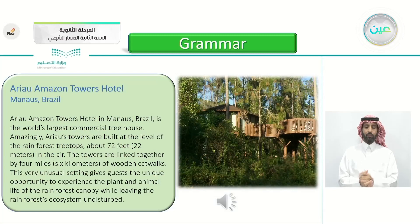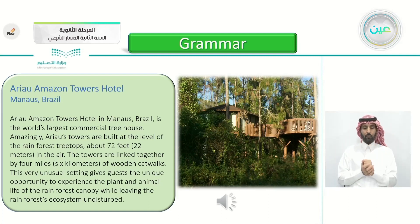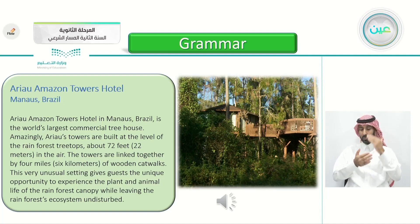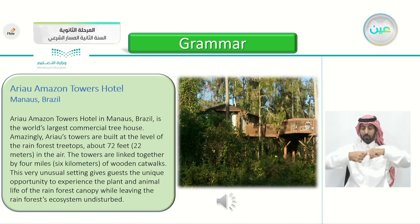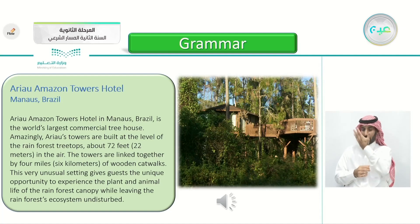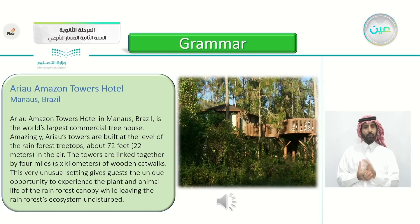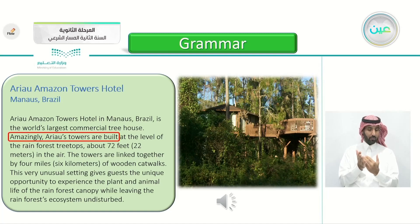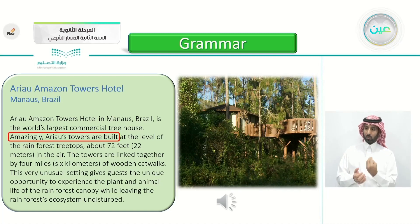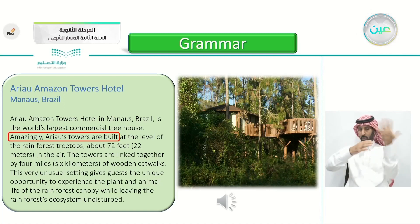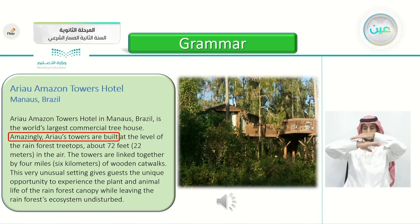The other article: Arayao Amazon Towers Hotel, Manaus, Brazil. 'Arayao Amazon Towers Hotel in Manaus, Brazil, is the world's largest commercial treehouse. Amazingly, Arayao's towers are built at the level of the rainforest treetops, about 72 feet (22 meters) in the air. The towers are linked together by 4 miles (6 kilometers) of wooden catwalks. This very unusual setting gives guests the unique opportunity to experience the plant and animal life of the rainforest canopy while leaving the rainforest's ecosystem undisturbed.' The example here is 'amazingly' — from the word itself, something amazing; he was amazed that the hotel is above the trees.